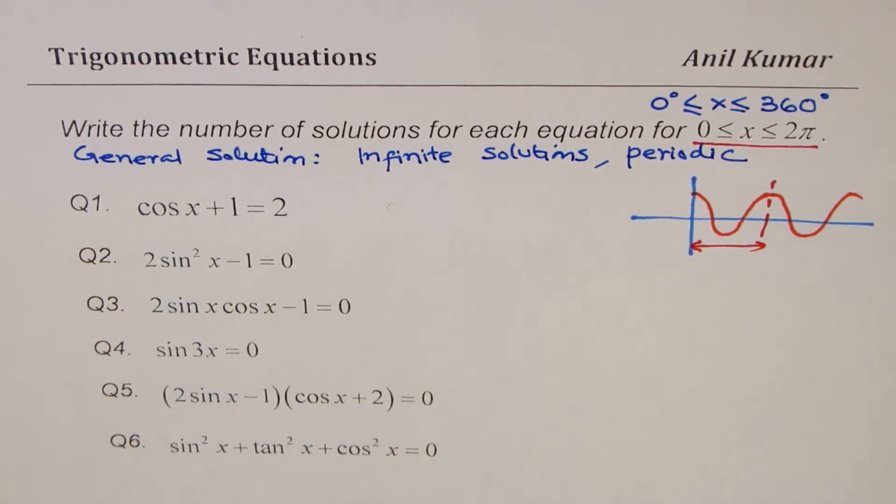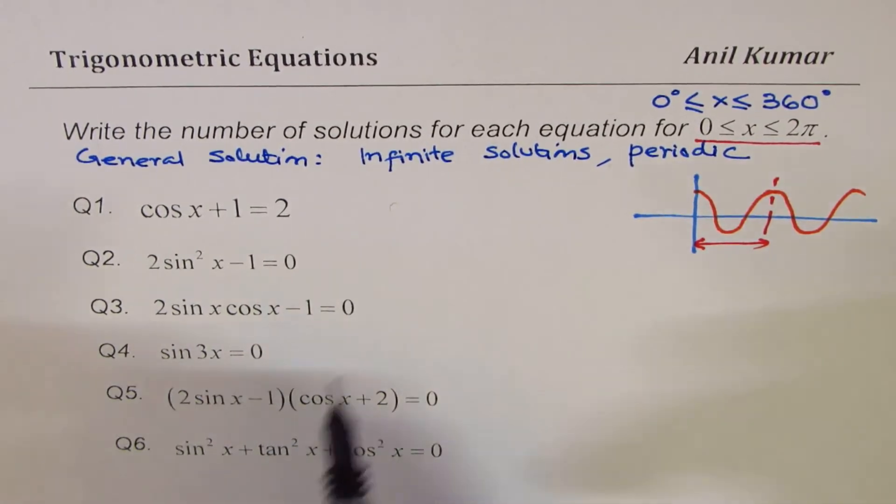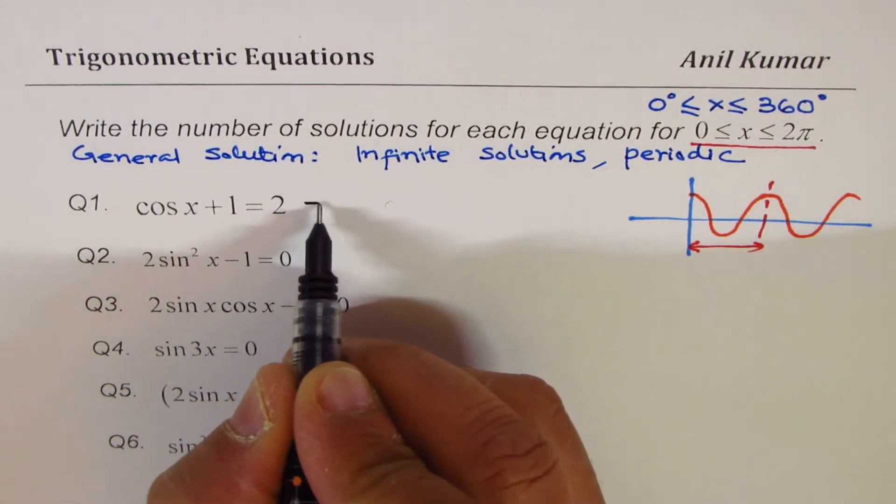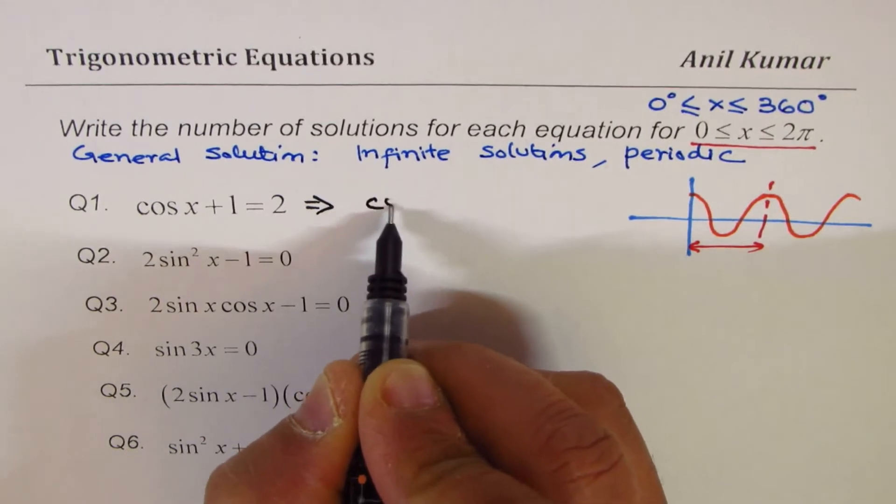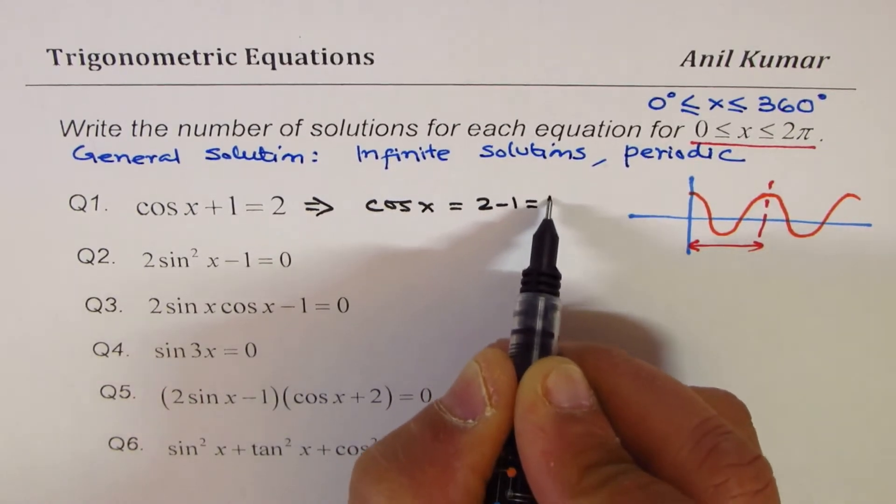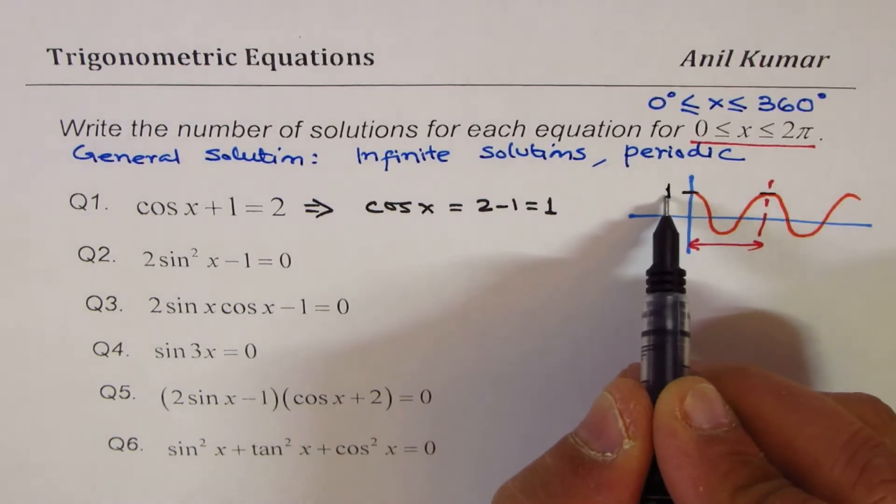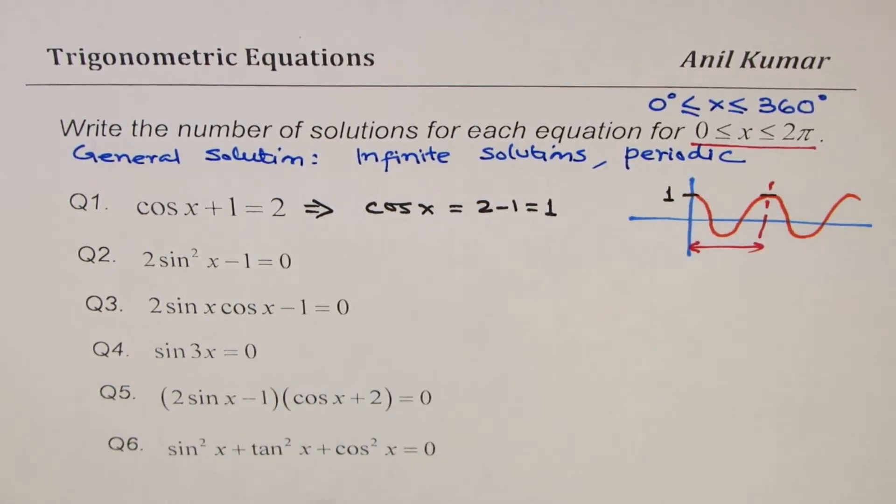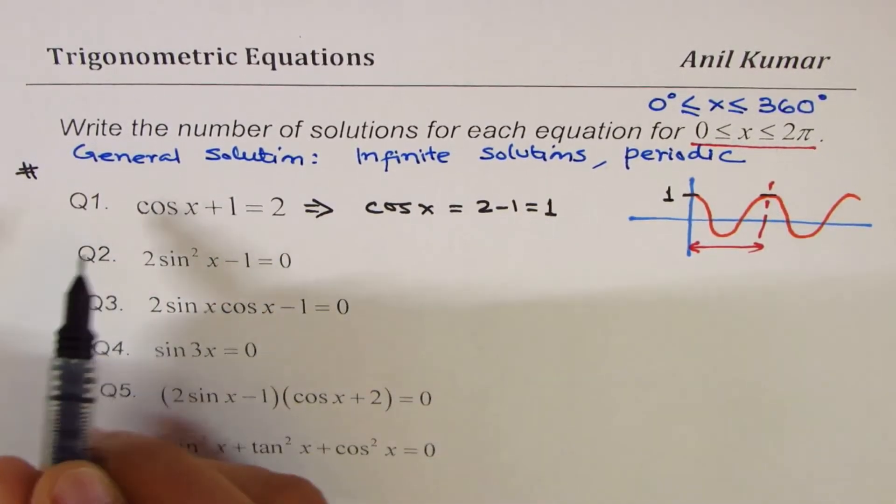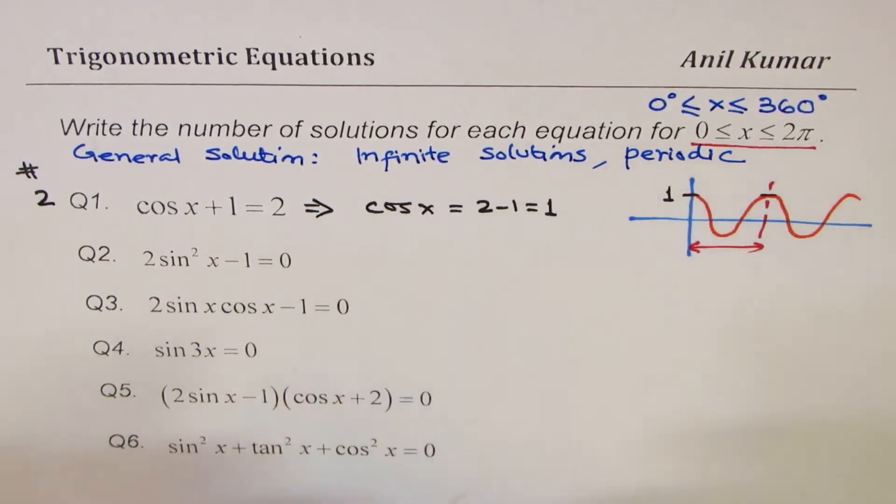Cos x + 1 = 2 really means I could rewrite this as cos x = 2 - 1, which is 1. Now, cos x has maximum value of 1, this is 1. So you can see we have two solutions here. The number of solutions for each is 2. One is at 0, the other one is at 2π.